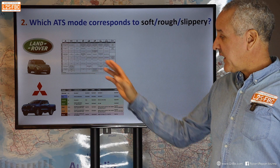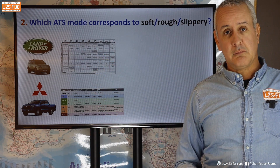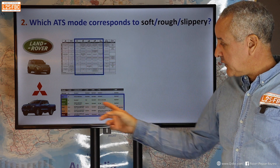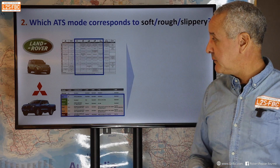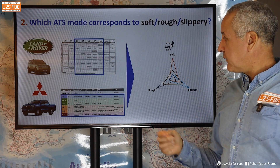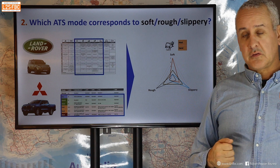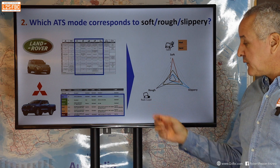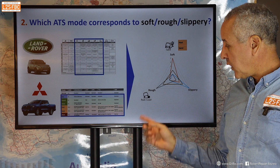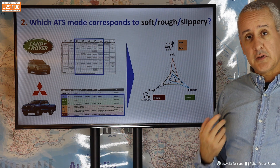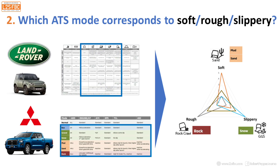Here are examples from Land Rover and Mitsubishi. For Land Rover, the soft mode is sand, the rough mode is rock crawl, and for slippery surfaces you use grass/gravel/snow. For Mitsubishi, mud and ruts covers the soft mode, rock is the rough mode, and snow covers slippery surfaces.